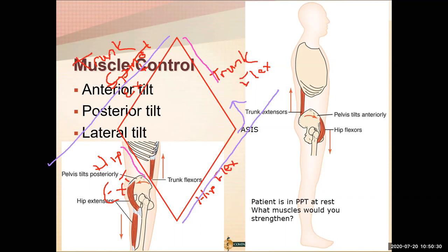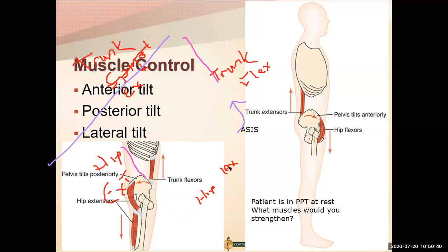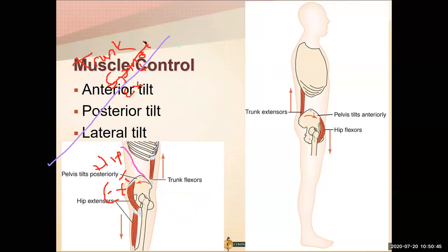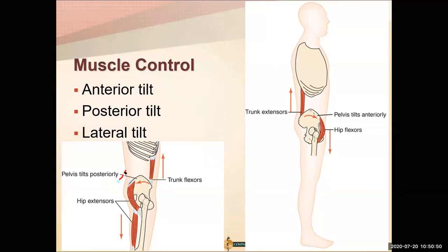Especially in a seated position, you'll really have to rely on your glutes to get into that pelvic tilt because your hamstrings are in a shortened position. Now let's look at lateral tilt on the diamond, drawing the right side versus left side with pelvic neutral coming straight across.